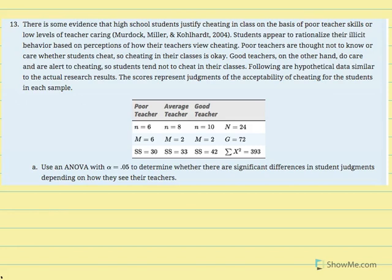Number 13, Chapter 12 ANOVA. There is some evidence that high school students justify cheating in class on the basis of poor teacher skills or low levels of teacher caring. Students appear to rationalize their illicit behavior based on perceptions of how their teachers view cheating. Poor teachers are thought not to know or care whether students cheat, so cheating in their classes is okay. Good teachers do care and are alert to cheating. Following hypothetical data similar to actual research results, the scores represent judgments of the acceptability of cheating for students in each sample. We have levels of poor teacher, average teacher, and good teacher, with sample sizes, means, and sum of squared deviations.